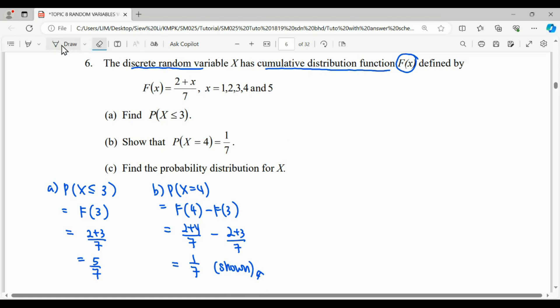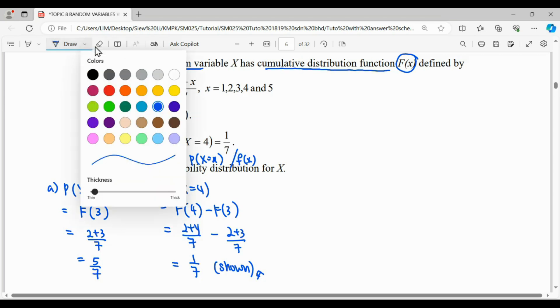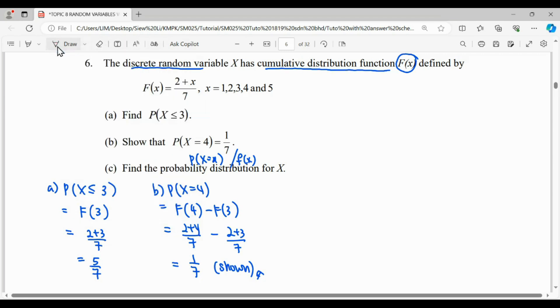For question C, we're going to find the probability distribution for X. This is our small f, or this can be written as P(X = x). What we're given here is big F, the cumulative function. To find this, we can draw it into a table.